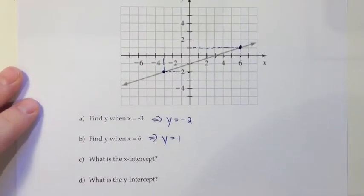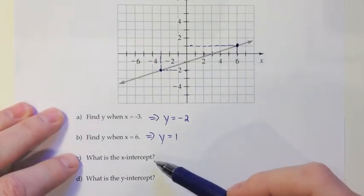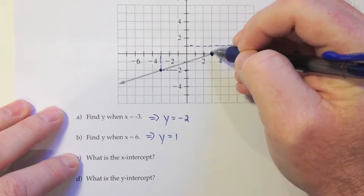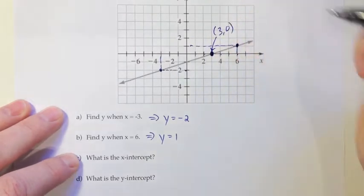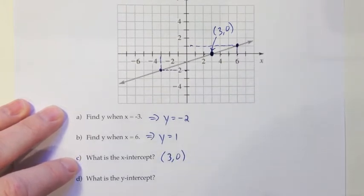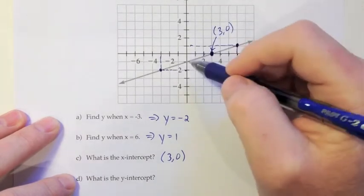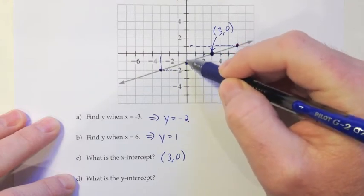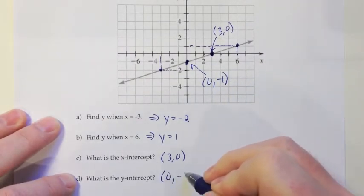And next they want us to find something called the x-intercept and the y-intercept. So the x-intercept is the ordered pair where our linear model intersects the x-axis. The x-intercept seems to be this point right here. If we were to label that, that looks like that would be over 3 and up 0. So that would be our x-intercept, the ordered pair (3, 0). That's really important. We always write our intercepts as ordered pairs. The y-intercept of our graph would be the spot where our linear model hits the y-axis. And that point is over 0 and down 1. So we'd say it's (0, -1).